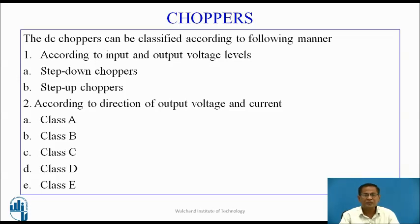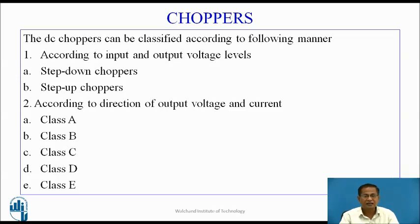DC choppers can be classified in the following manner. First, according to input and output voltage level: step-down chopper and step-up chopper. In the step-down chopper, output voltage is less than input voltage. In the step-up chopper, output voltage is greater than input voltage. Second, according to the direction of output voltage and current: Class A, Class B, Class C, Class D, and Class E.